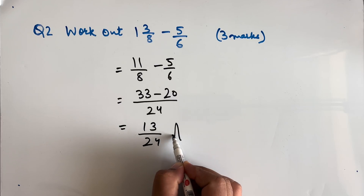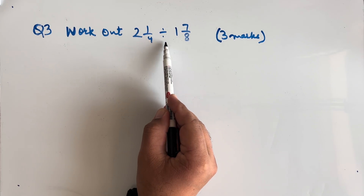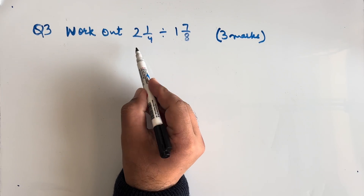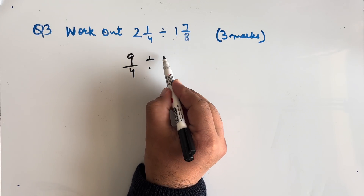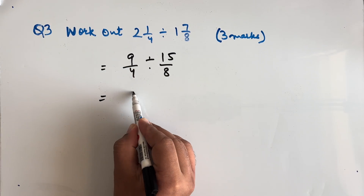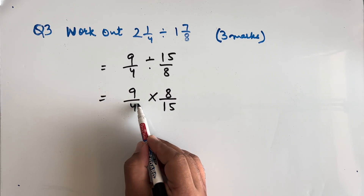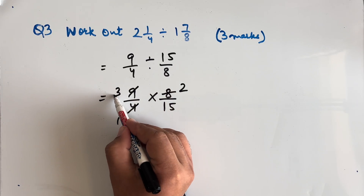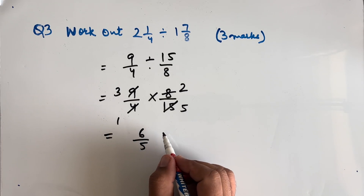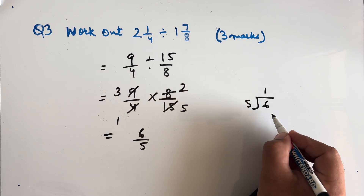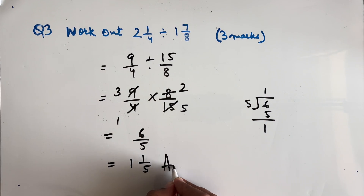Question 3: Work out 2 and 1/4 divided by 1 and 7/8. 2 and 1/4 becomes 9/4 and 1 and 7/8 becomes 15/8. We write it as 9/4 × 8/15. Cancelling: 9/4 × 8/15 gives 3/1 × 2/5 = 6/5. Converting to a mixed fraction: 6 divided by 5 gives 1 and 1/5 as our final answer.